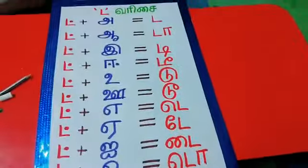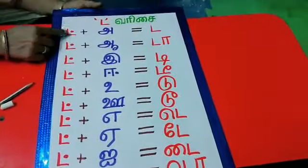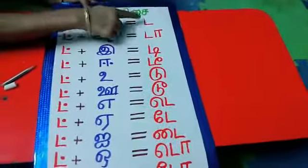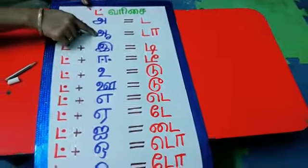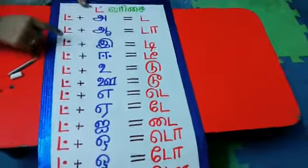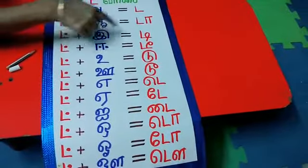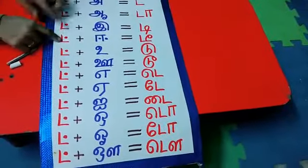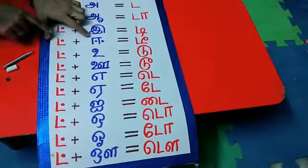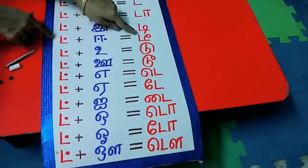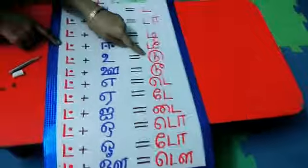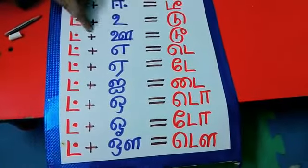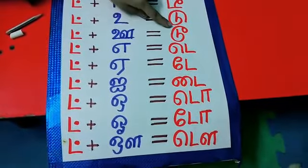Look at this chart everybody, come on see. It plus a — da. It plus i — di. It plus u — du.